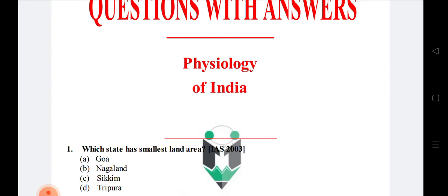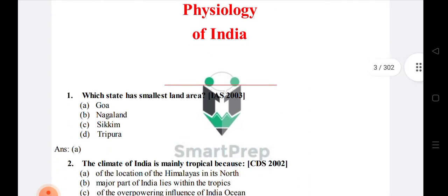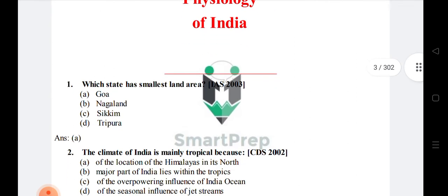Question 1: Which is the smallest size state? The right answer is option A — Goa. Question 2: The climate of India is mainly tropical because of what? India's climate is tropical because of the location of the Himalayas.